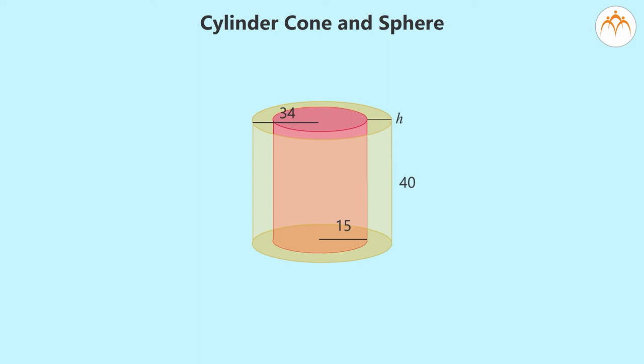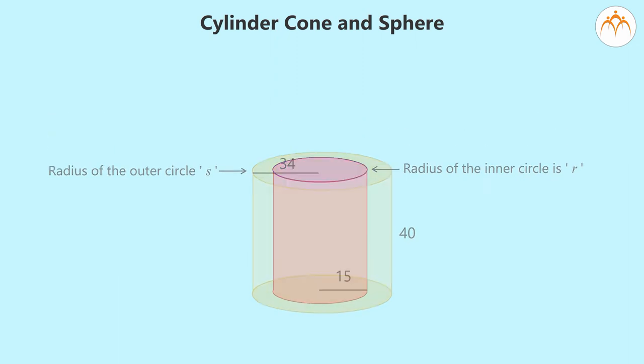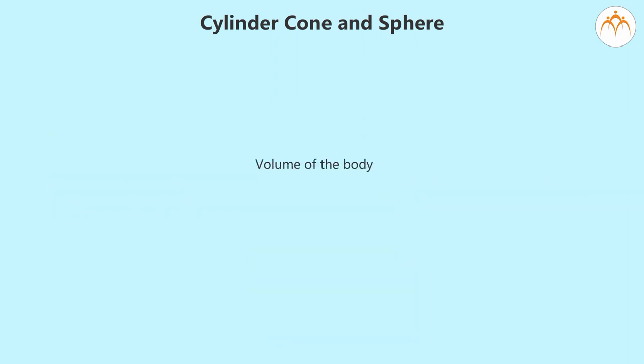To find it, we have to calculate the volume enclosed by the outer surface and the volume inside. Subtract the second from the first. Radius of the inner circle is r and the outer circle is s. We have volume of the body equal to πs²h - πr²h = πh(s² - r²).